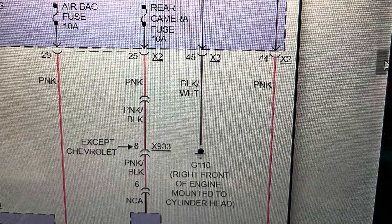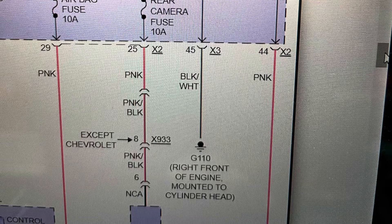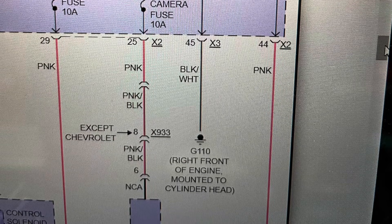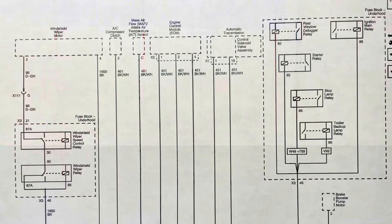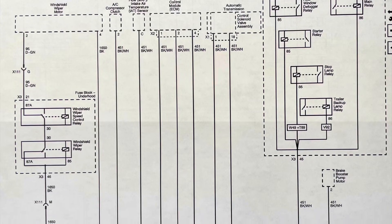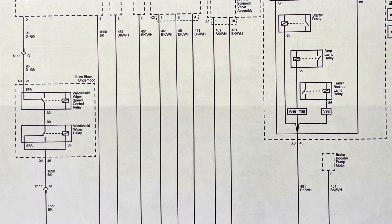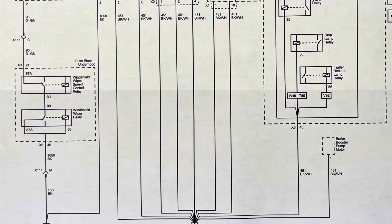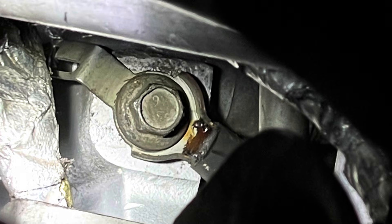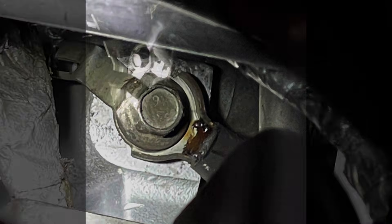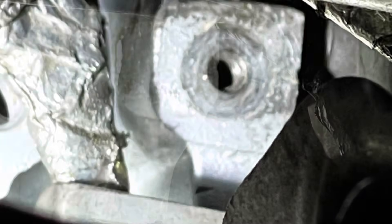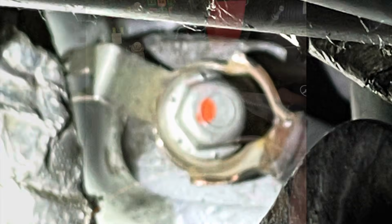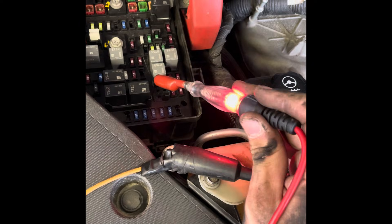Looks like our old friend G110 needs a much closer look. I eventually found the missing piece of information on the ground distribution diagram for G110. G110 happens to be in a really tight spot and hard to access. I had trouble removing, inspecting and cleaning the metal surfaces, but after the effort, the test light now lights brightly, communication is restored, and the engine now starts and runs. Thanks for watching.